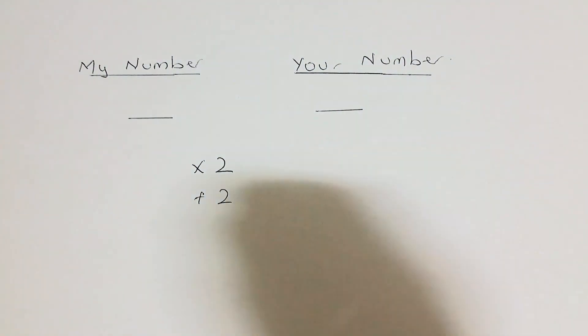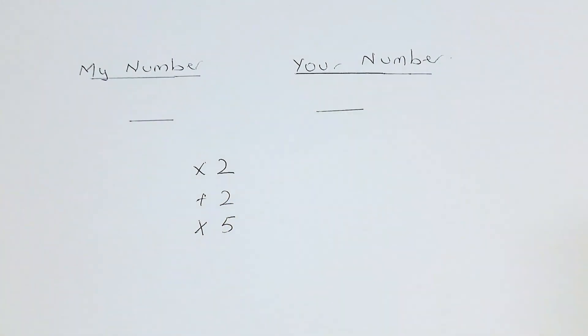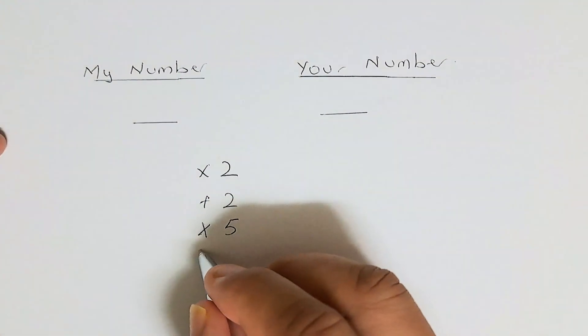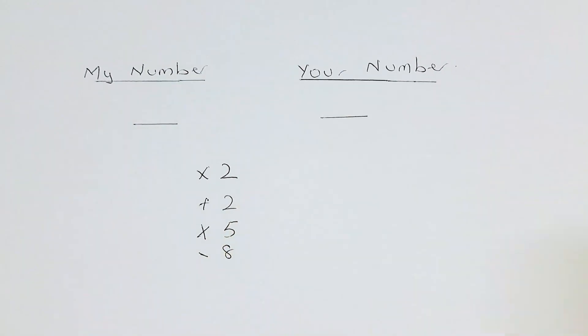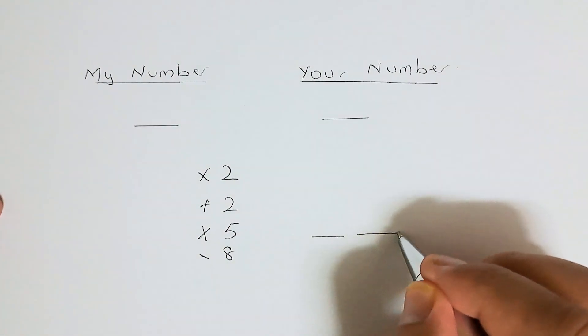And next step, you are going to multiply by 5. Have you got that so far? Great. The last step, you are going to minus 8 from the result, and you get a 2-digit answer.